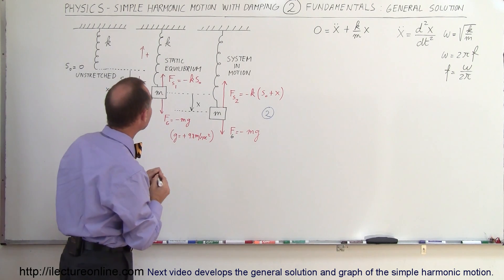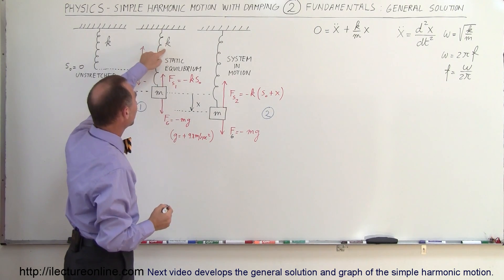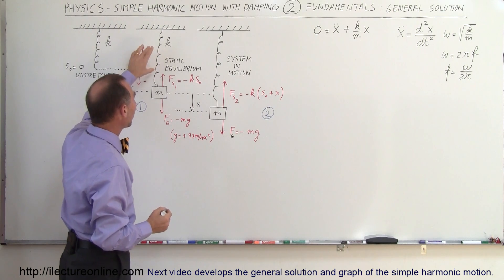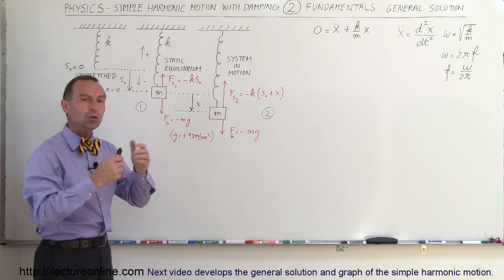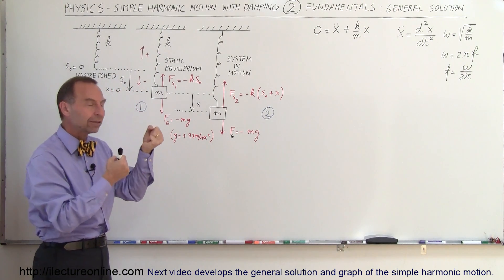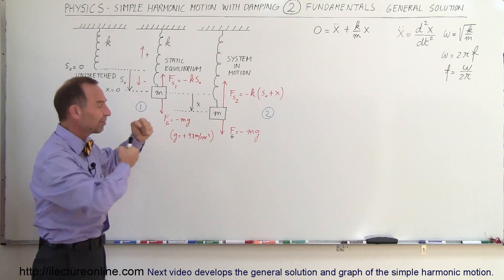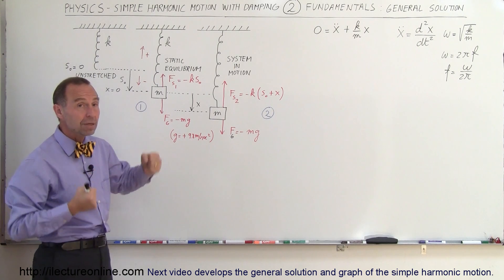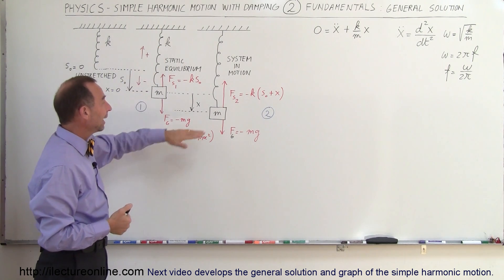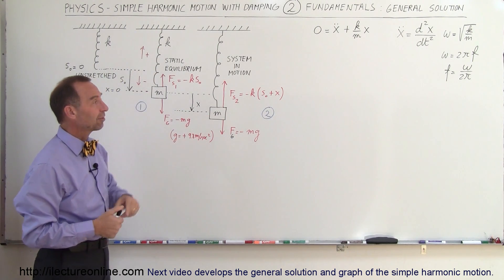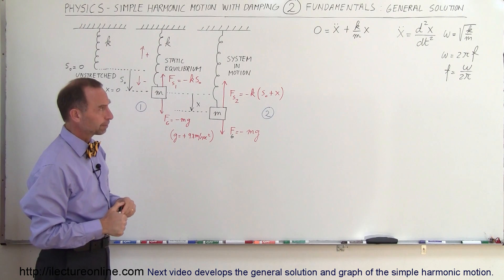Remember that k is the spring constant of the spring — it's the number of newtons you have to apply to the spring to expand it one meter, so it's newtons per meter as the general units. And m is the mass in kilograms.